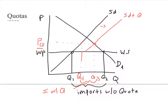Of the imported goods allowed under the quota, the quota revenue is represented by a box on the graph. The overall welfare loss from the quota is represented by a trapezoid shape. Free trade is efficient, and any deviation from free trade is less efficient, so there is welfare loss from the quota.